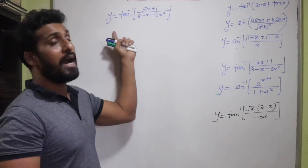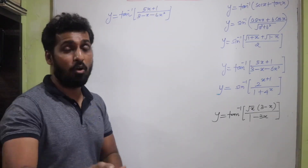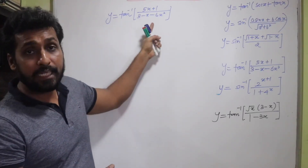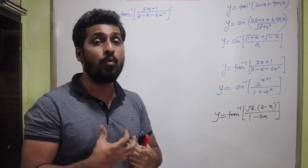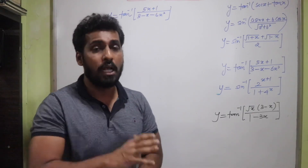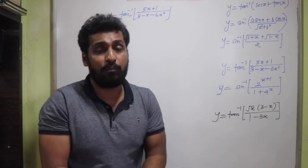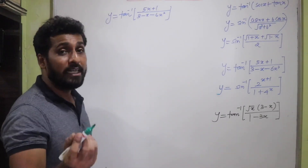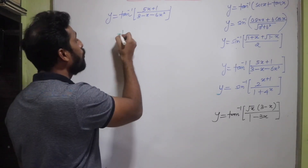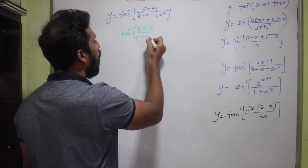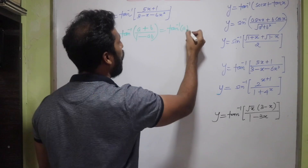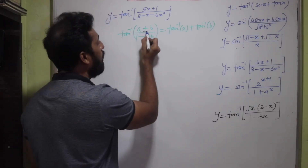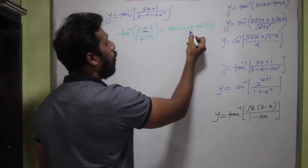The next question is y = tan⁻¹((5x+1)/(3−x−6x²)). Since we have tan⁻¹ outside, we try to get tan inside. But sometimes questions are tricky — no standard substitution is available, so we use the formula: tan⁻¹((a+b)/(1−ab)) = tan⁻¹(a) + tan⁻¹(b).